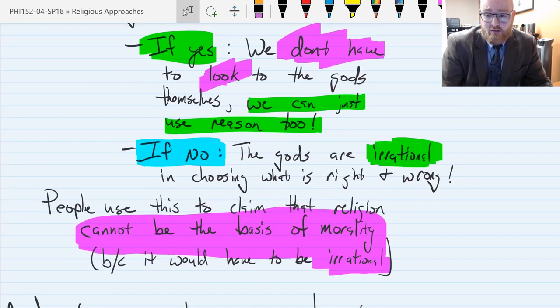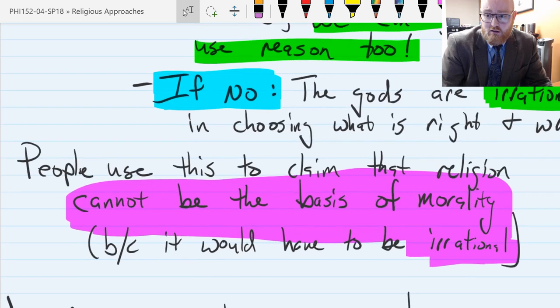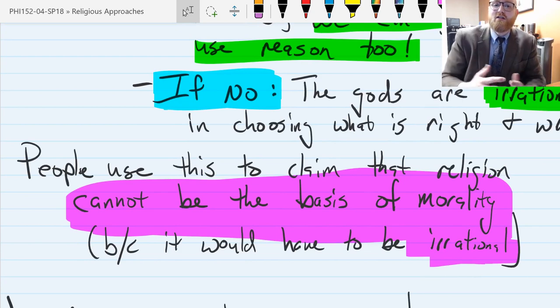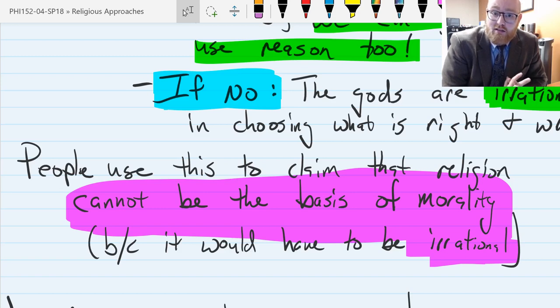Now people use this type of argument, the Euthyphro dilemma, to claim or demonstrate that religion cannot itself be the basis of morality, because it would then have to be fundamentally irrational.